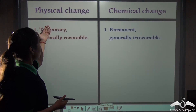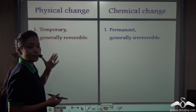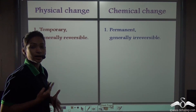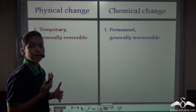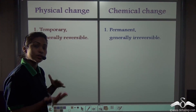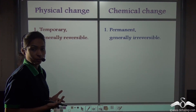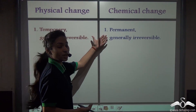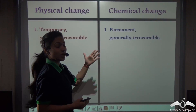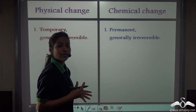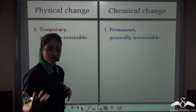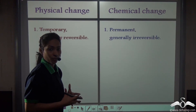First of all, a physical change is a temporary change — you can say that it is generally reversible. You can generally bring back the changed substance to its original form. Whereas a chemical change is a permanent change, or you can say it is generally irreversible, meaning you cannot bring back the changed substance to its original form.